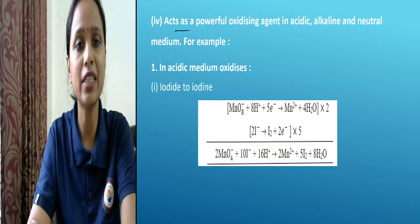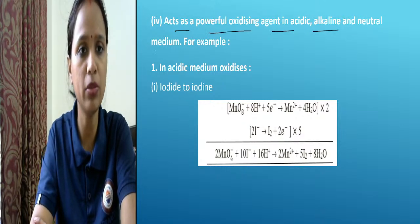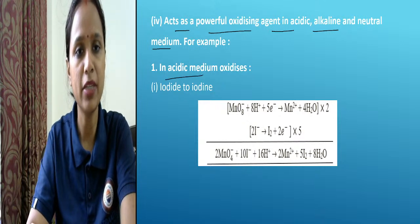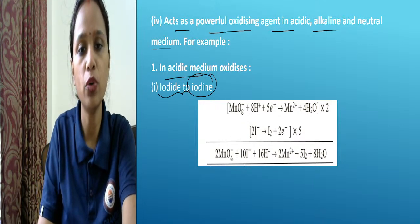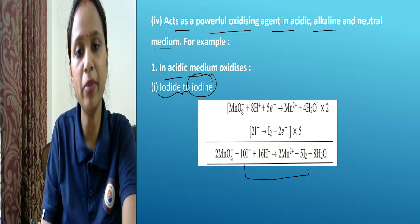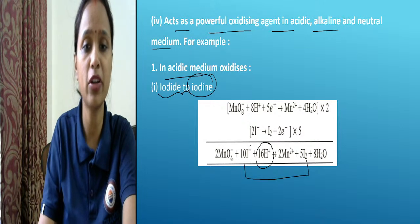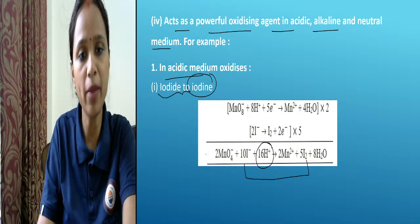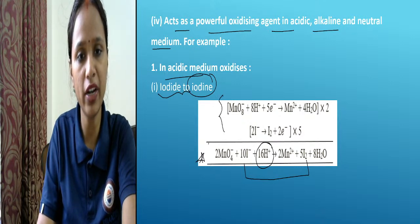It acts as a powerful oxidizing agent in acidic, alkaline, and neutral medium. For example, in acidic medium it oxidizes iodide to iodine — the same reaction we have seen for potassium dichromate. This iodide to iodine reaction in acidic medium is important, and its balancing is really very important.